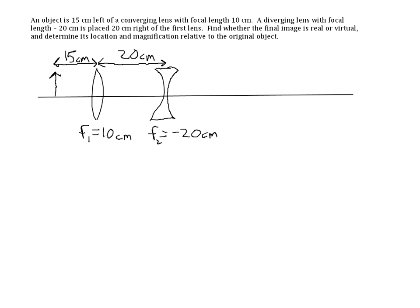After sketching the situation, here are the steps to follow when finding the image for a double-lens system. The first thing you should do is ignore the second lens — just forget it's there — and treat it as a single lens problem using the first lens. Find the image due to that first lens.